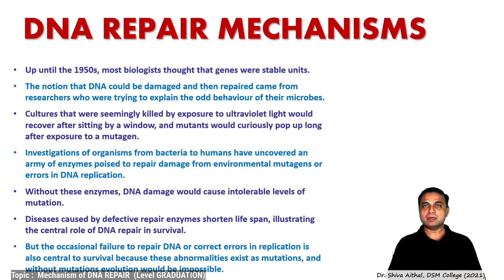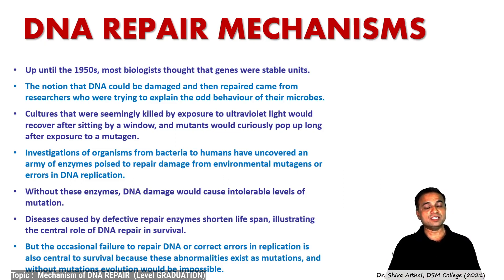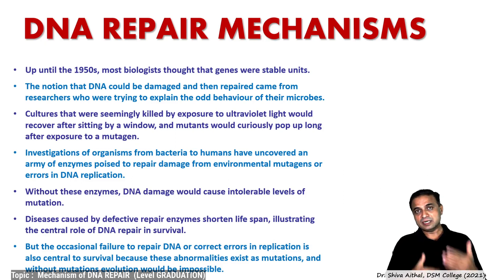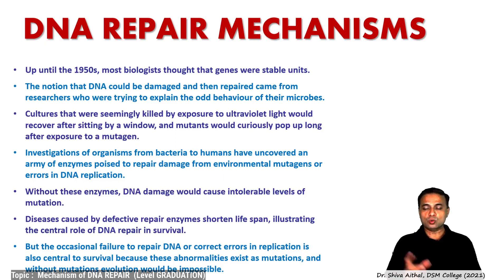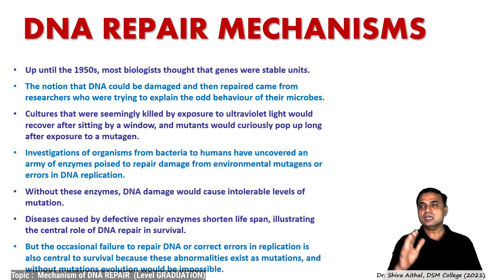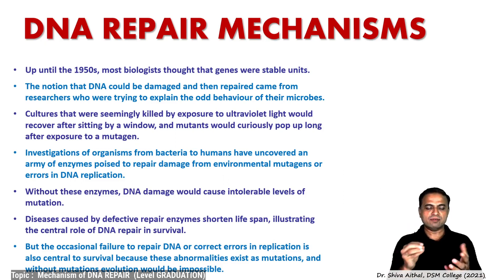There are certain repair mechanisms, but this was not known until 1950, when biologists thought that genes were very stable units in a cell. The idea that DNA can be damaged and then repaired came by accidental observations by researchers exposing microbial cells to ultraviolet light or chemical and physical mutagenic agents. In one such study, cells were exposed to ionizing radiation and then placed in a window where visible light fell on them.